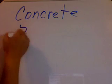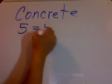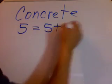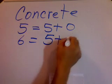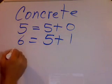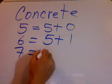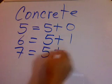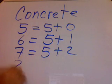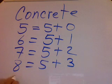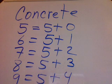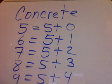If we say that 5 equals 5 plus 0, we can say 6 equals 5 plus 1, 7 equals 5 plus 2, 8 equals 5 plus 3, and 9 equals 5 plus 4. It's simple to add 5 — the easiest thing to add is 5.